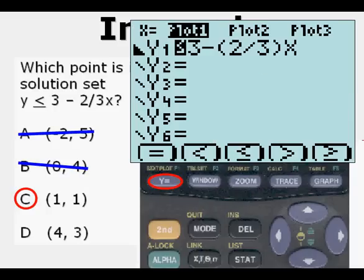Now, what I'd like to do is go back to the Y equals view, and we're going to change this less than or equal to sign to a different sign. We're going to change it to less than. In order to do that, we press ALPHA first, and we press the WINDOW key, which is right below the less than sign. We do that, and it changes it to less than.